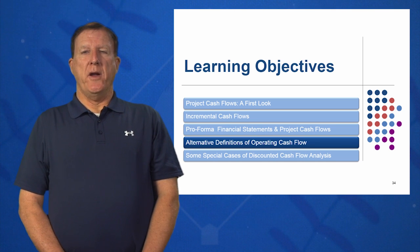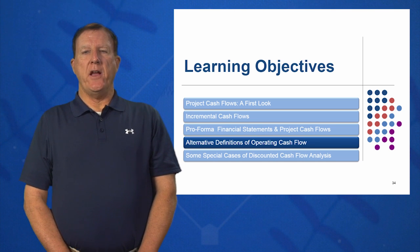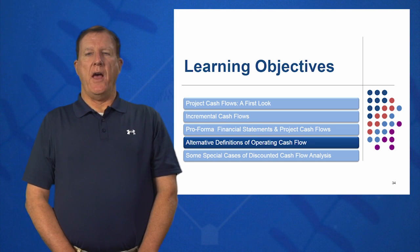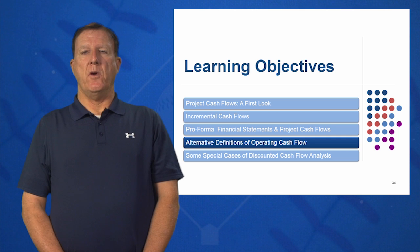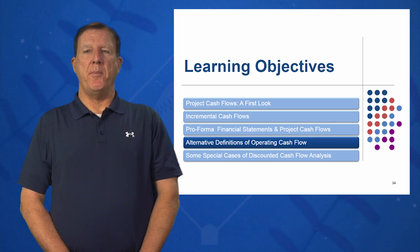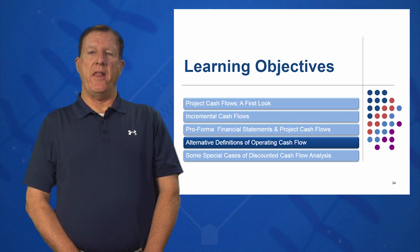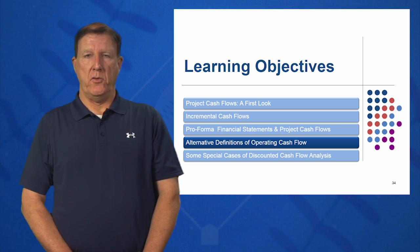In learning objective four, we're going to look at three alternative definitions of OCF: the bottom up, the top down, and the tax shield approach.